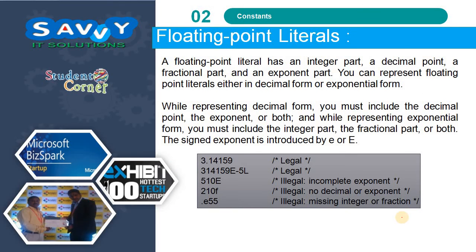Floating point literals: a floating point literal has an integer part, a decimal part, a fractional part, and an exponent part. You can represent floating point literals either in decimal form or in exponential form. While representing in decimal form, you must include the decimal point, the exponent, or both. While representing in exponential form, you must include the integer part, the fractional part, or both. The signed exponent is introduced by e or E.